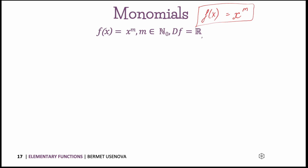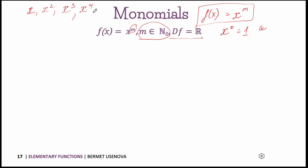Here m is an element of the natural numbers starting from 0, which means that x to the power of 0 — equal to 1 — is also included in monomials, and the domain is all real numbers. Instead of n we can put any natural number. So monomials could be, for example, x, x squared, x to the power of 3, x to the power of 4, and so on.